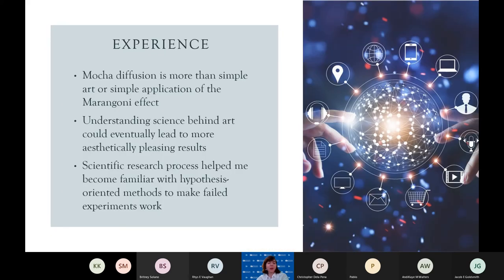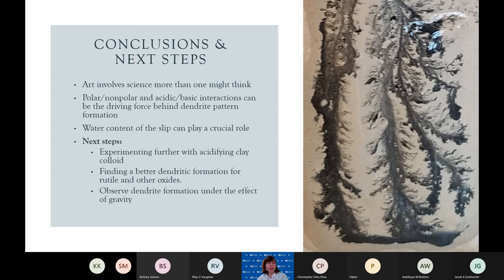Mocha diffusion proved itself to be more complex than just simple art or aimless trial and error. Despite the complexity of numerous variables and many more experiments to go, one thing that can be strongly said is that the Marangoni effect is definitely not the only mechanism happening here. We believe that understanding the science behind art could eventually lead to more beautiful patterns, since every pattern can be enhanced based on chemical interactions and ingredients. For me personally, this research helped me become familiar with formulating hypotheses and finding new ways to move forward when a result was obtained. Our next steps involve further pH experiments and acidification of the clay colloid, finding better dendritic formation for other pigments including rutile and cobalt oxide, and observing dendrite formations under the effect of gravity.